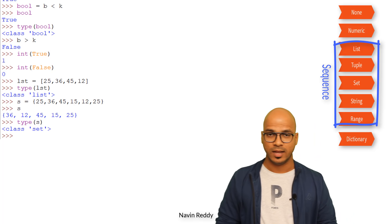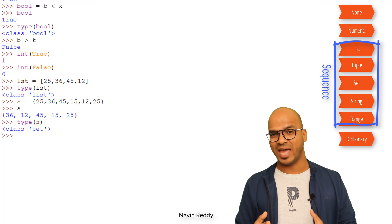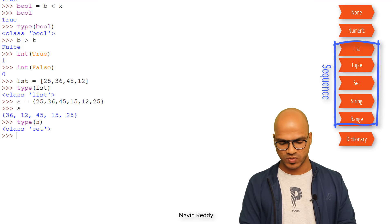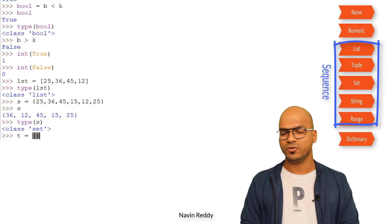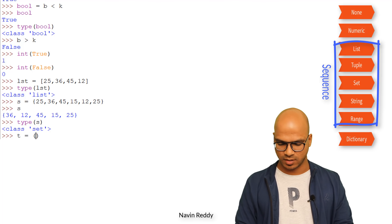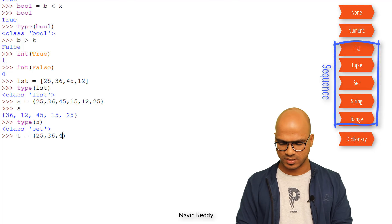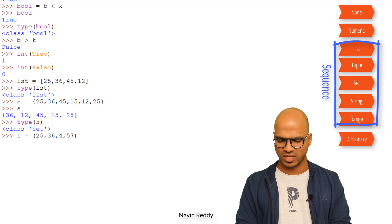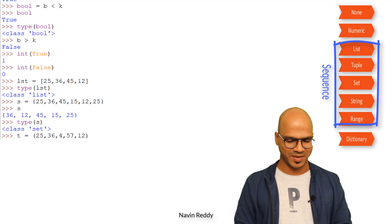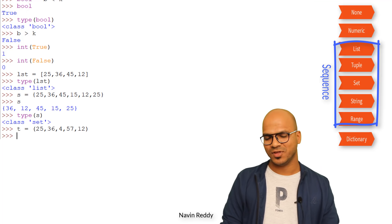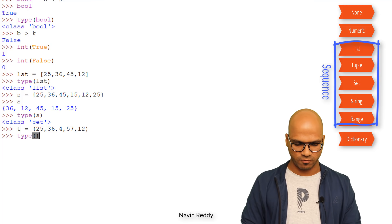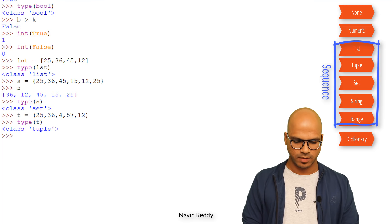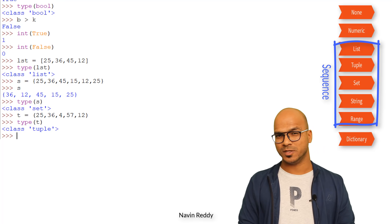Another type we have is tuple, which we have worked with. I'll say t equal to round brackets — for example (25, 26). If I check the type of t, it is tuple.